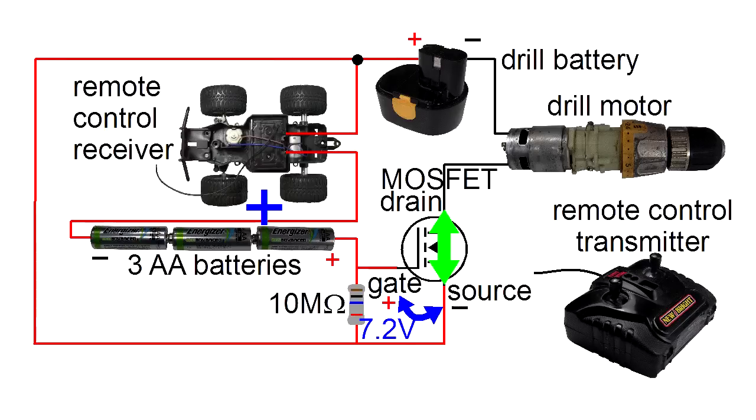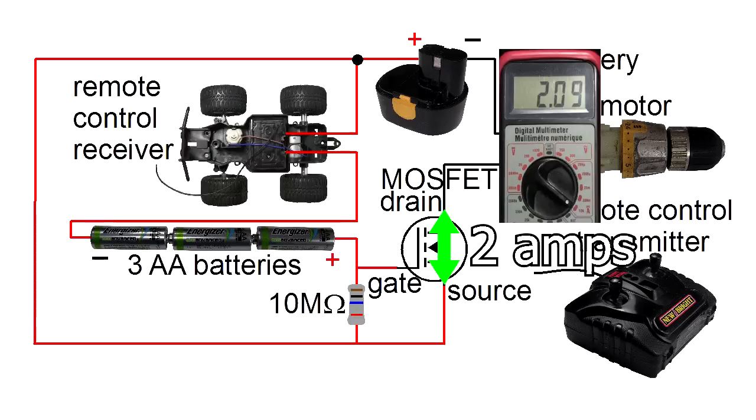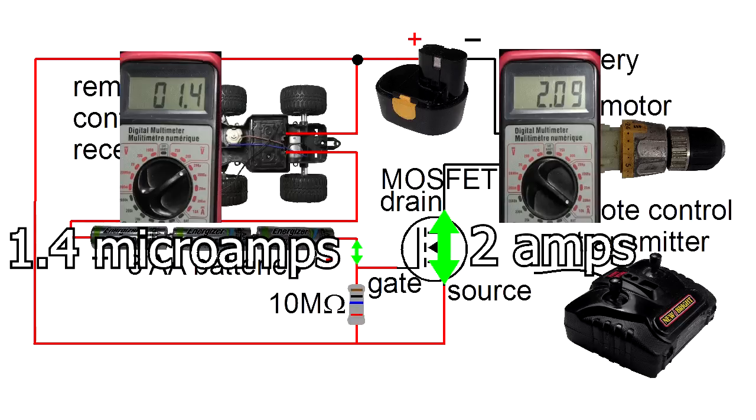For anyone trying to learn electronics, adding batteries like this is called biasing. You're adding voltage to the truck's voltage to get what you need. But the key point, and it's the problem we were trying to solve, is that even though the drill current here is large, around 2 amps, the controlling current here from the truck is small, around 1.4 microamps. Success.